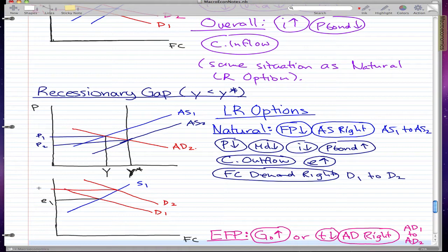This is the new exchange rate. The FC demand moves right because, as you can remember from the last video, people don't want their domestic money, they want their foreign currency money because foreign bonds are currently cheaper.